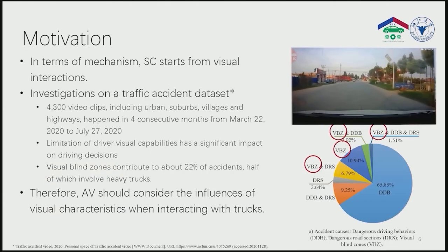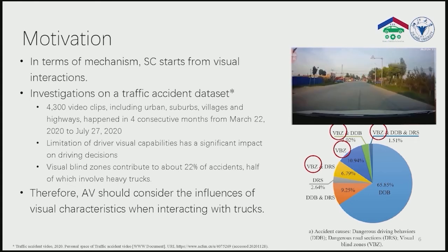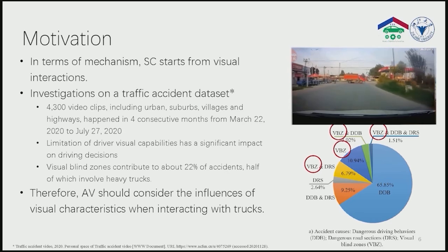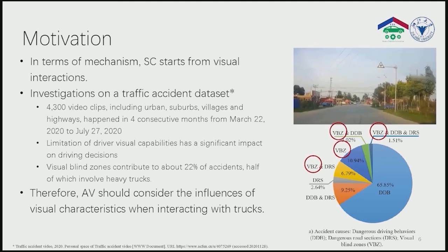Visual perception plays a key role in human driver perception. It provides most of the information for further prediction and planning tasks in driving. In terms of mechanism, social compatibility starts from visual interactions.